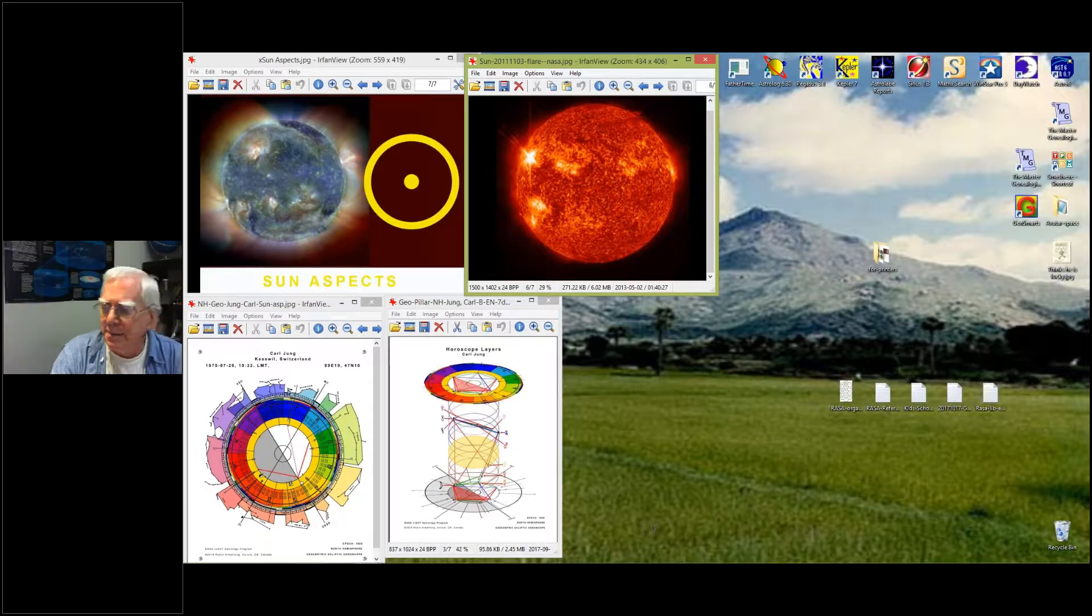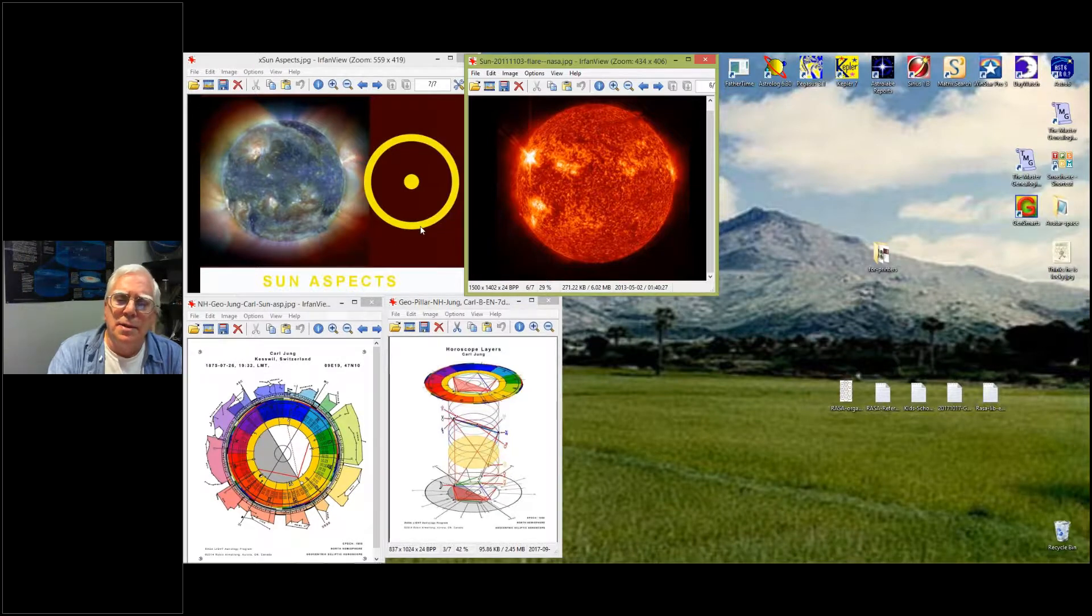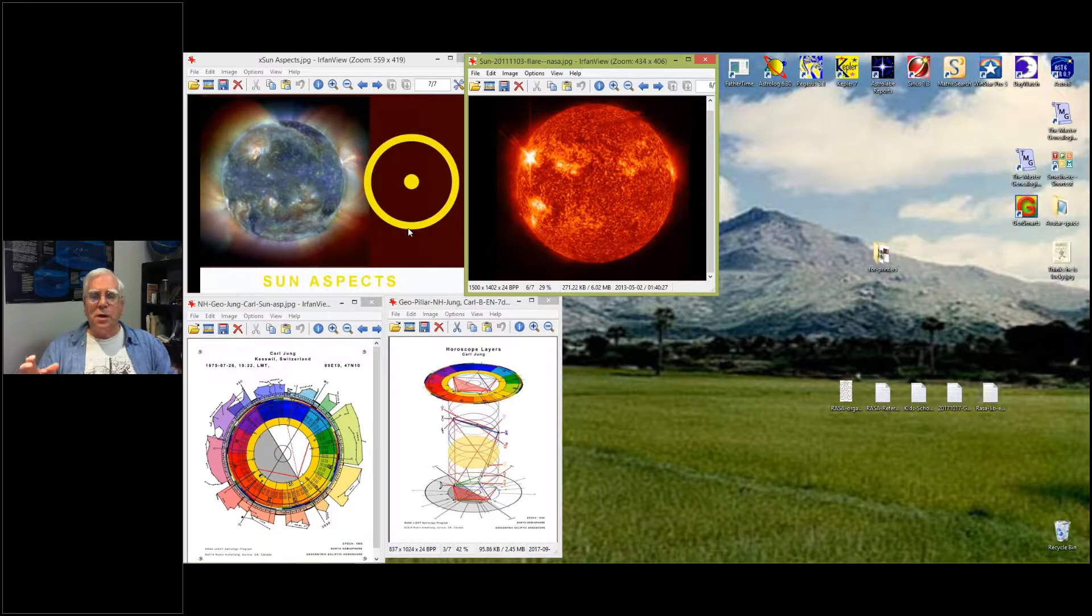When we get to Saturn to the Sun - when Jupiter is exaggerating, Saturn is restricting. Any conjunction, square, or opposition to the Sun is going to cause caution, restraint, inhibition, restriction. It's going to put defenses around the Sun, put chains on the Sun. It's going to make someone somewhat inhibited and lack confidence.